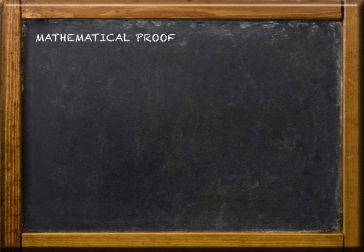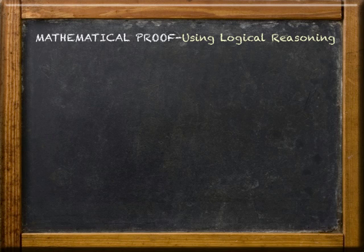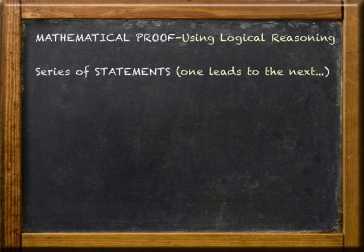To prove a mathematical statement, we use an orderly process called logical reasoning. And this orderly process is often a series of connected statements, where one statement leads to the next, which leads to the next, and so on, until we arrive at the statement we're trying to prove.